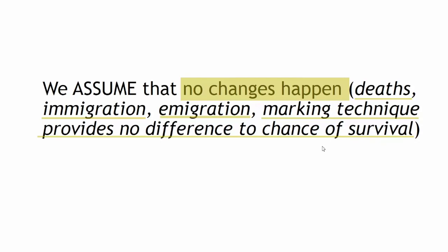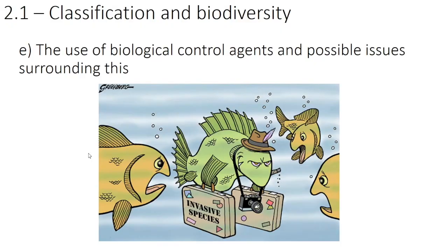If we're putting a massive red dot on a turtle, the chances of it being noticed by predators could be higher, and that could affect its survival. So we have to be careful when marking creatures that it's subtle and not going to affect their chance of survival. And that's it for this higher spec point — it wasn't that bad. Next time we're going to be finishing off the whole 2.1 topic with the use of biological control agents and possible issues surrounding it.